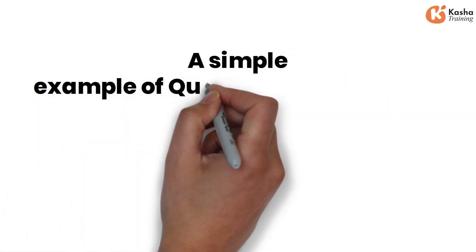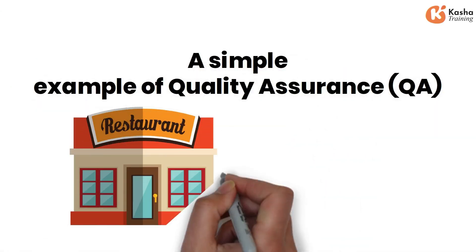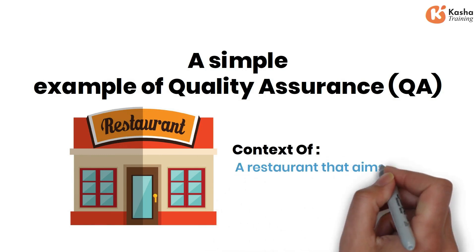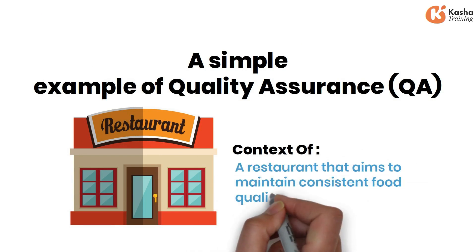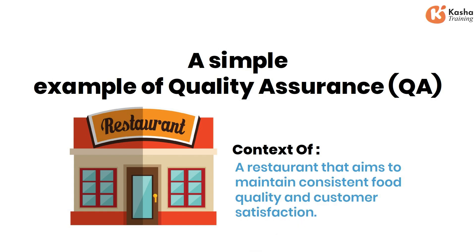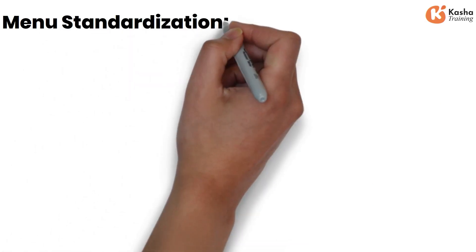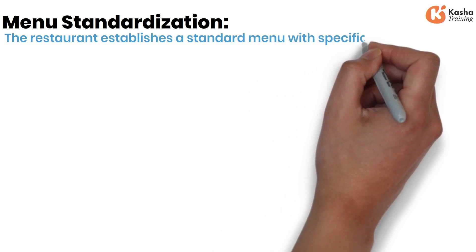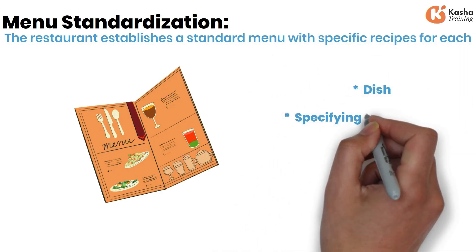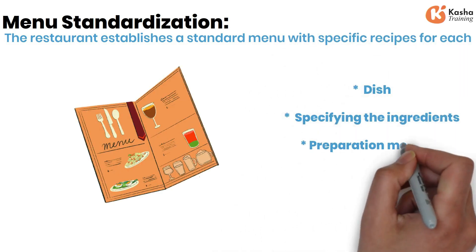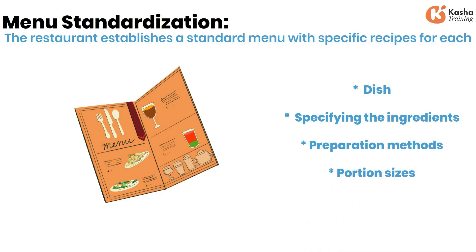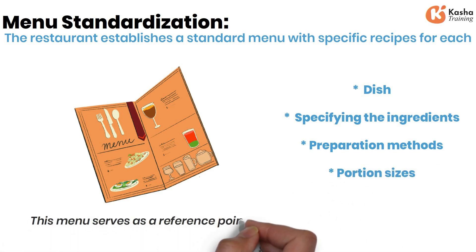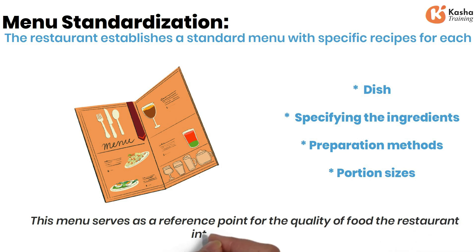A simple example of quality assurance, QA, can be seen in the context of a restaurant that aims to maintain consistent food quality and customer satisfaction. Here's how QA principles can be applied in this scenario. Menu Standardization: the restaurant establishes a standard menu with specific recipes for each dish, specifying the ingredients, preparation methods, and portion sizes. This menu serves as a reference point for the quality of food the restaurant intends to provide.